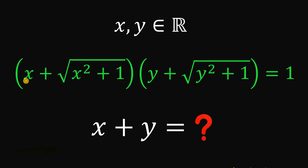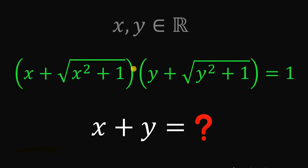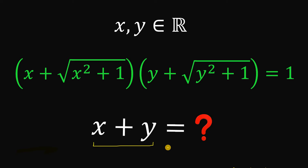Given this equation: the quantity x plus square root of x squared plus 1, multiplied by the quantity y plus square root of y squared plus 1, equals 1, wherein x and y are both real numbers. Our goal in this question is to find the numerical value of x plus y.